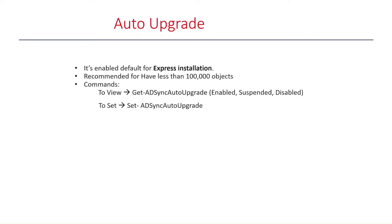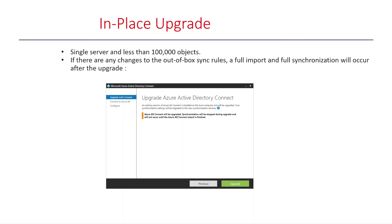In-place upgrade is the preferred method when you have a single server and fewer than 100,000 objects. If there are any changes to the out-of-the-box sync rules, a full import and full synchronization will occur after the upgrade.